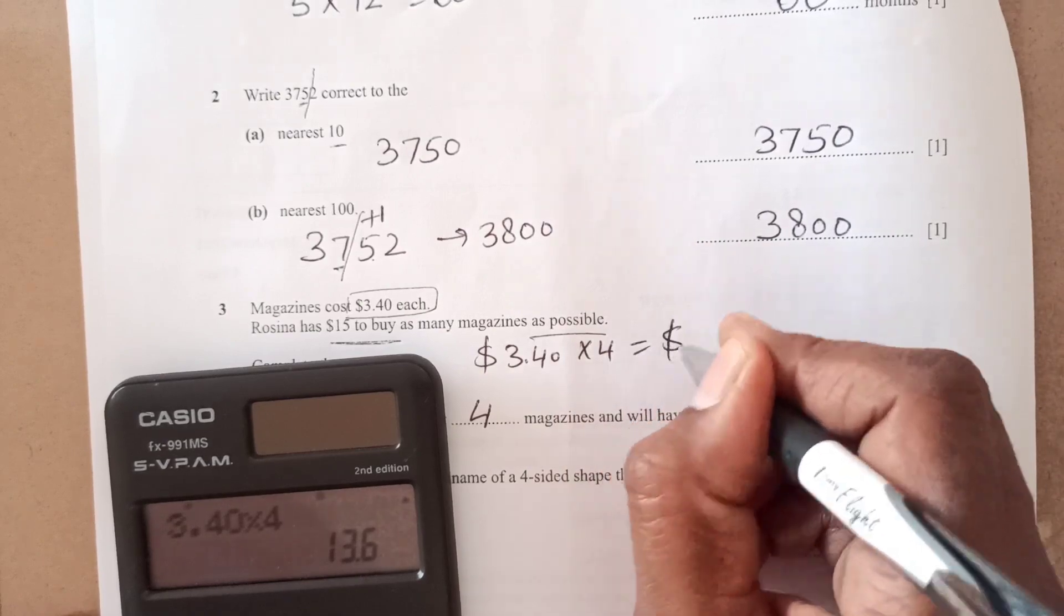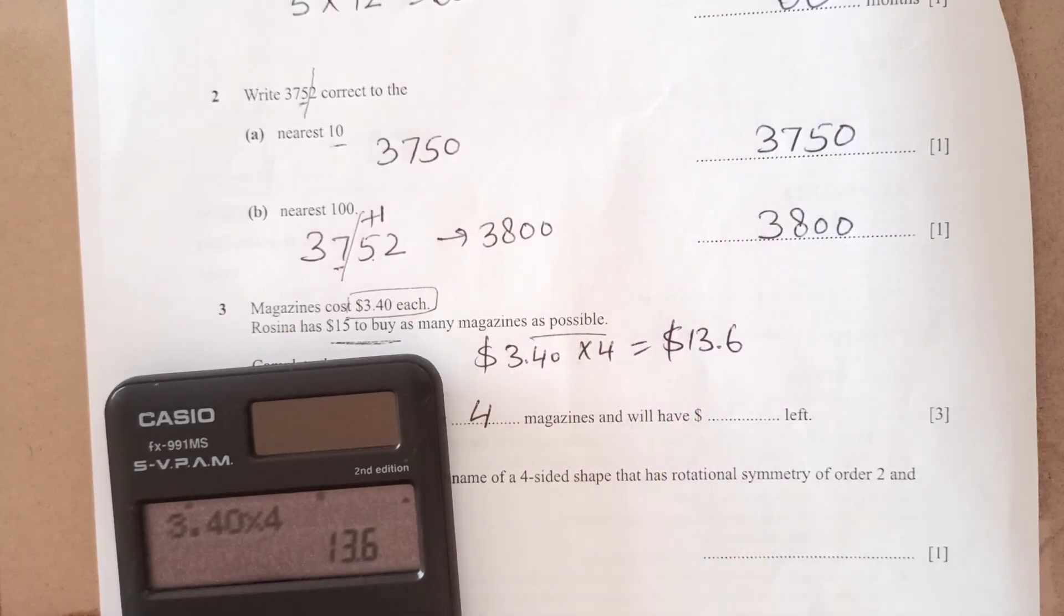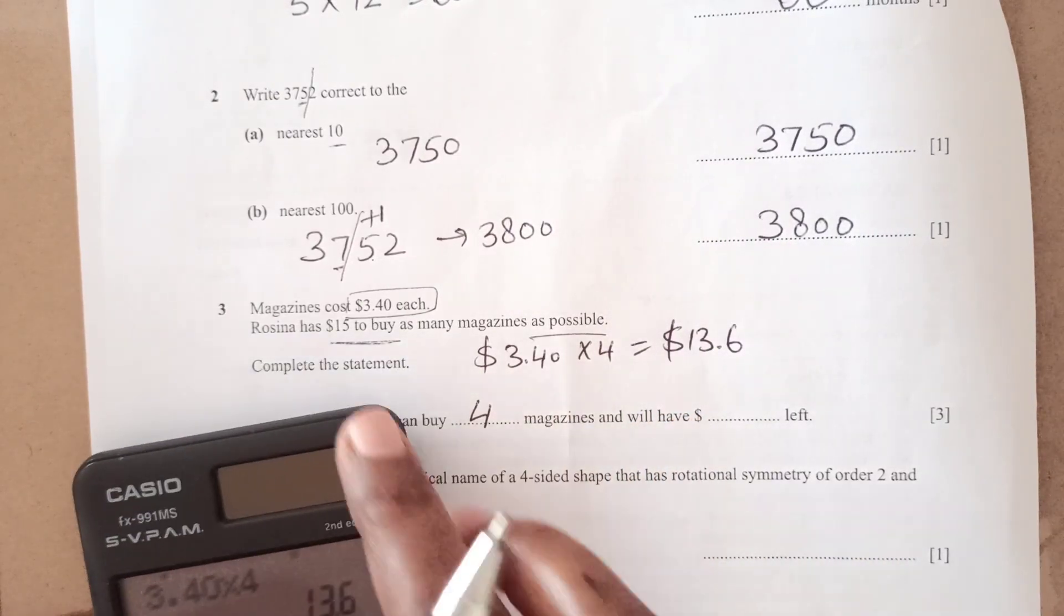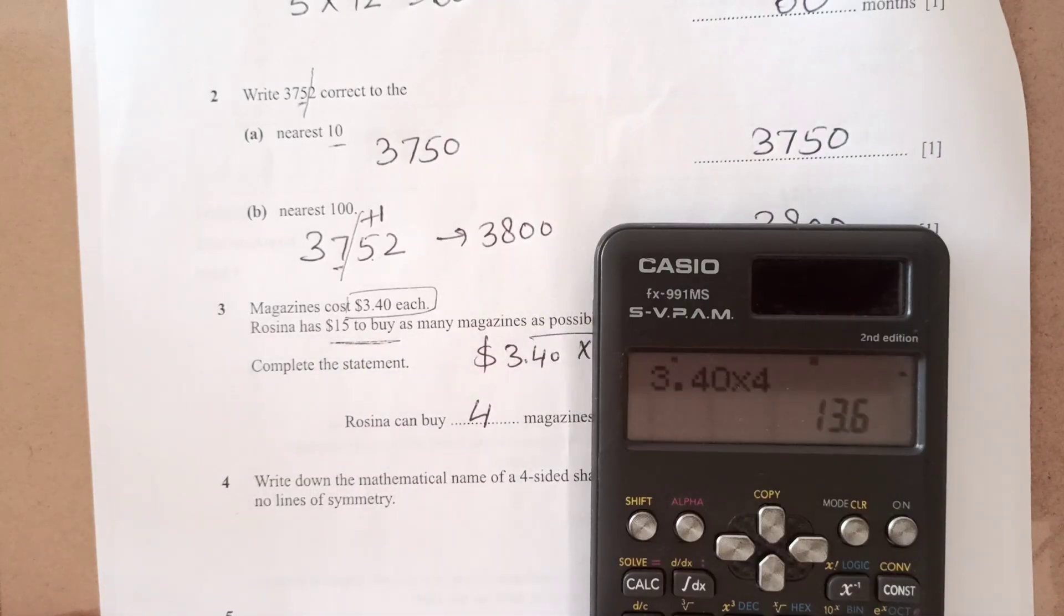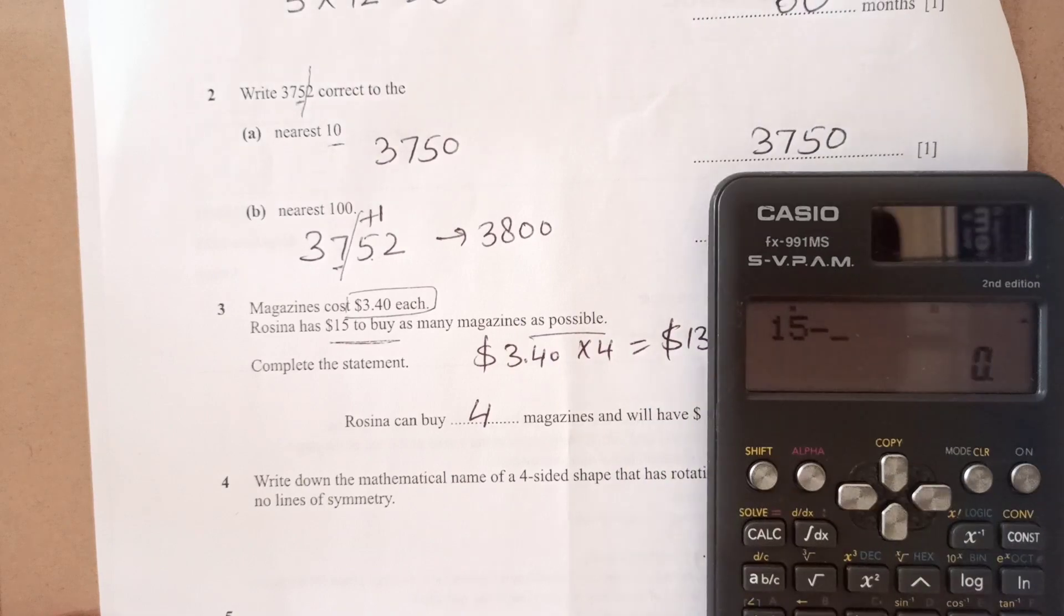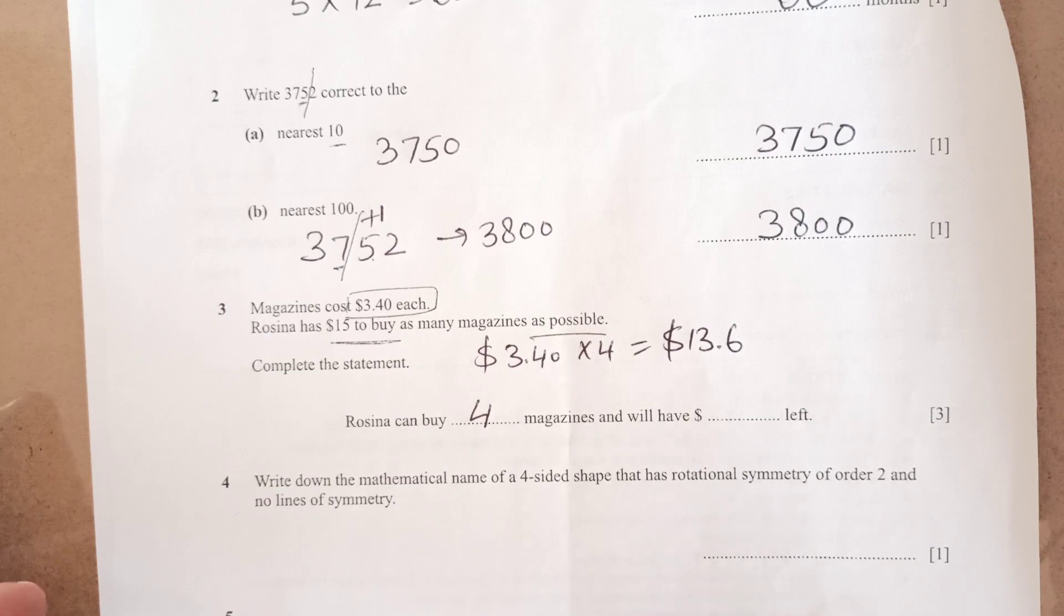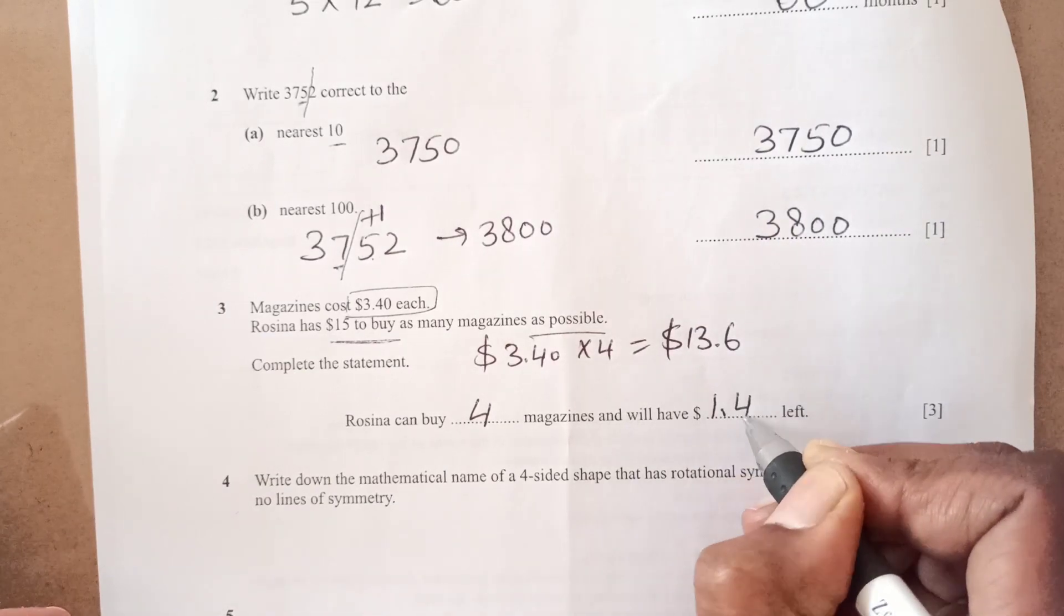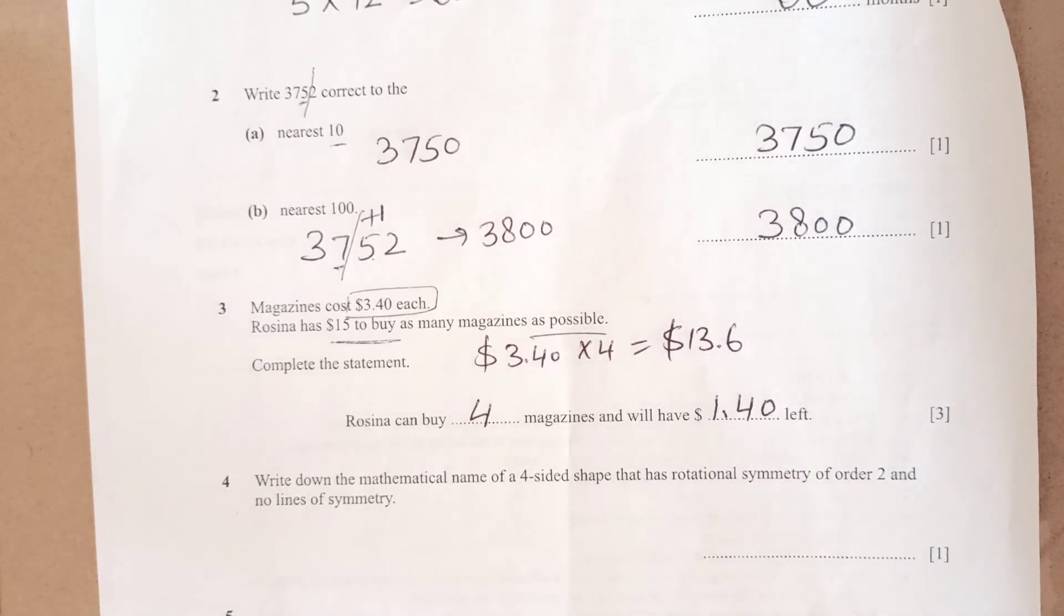That is the cost of 4 magazines. But she has $15. So we can subtract this from 15, 15 minus 13.6. That will be the remaining amount. That is 1.4 in dollars. We can write down 1.40 left.